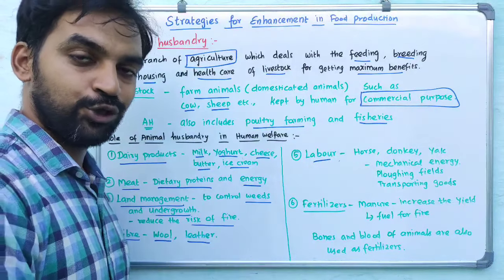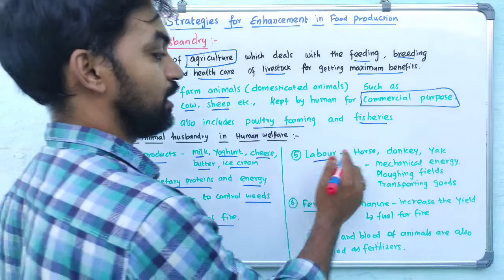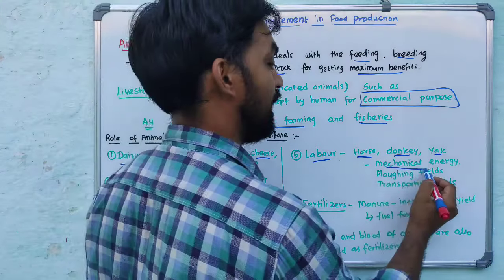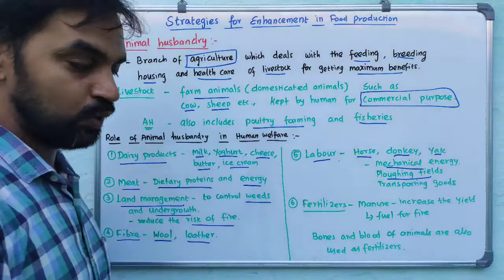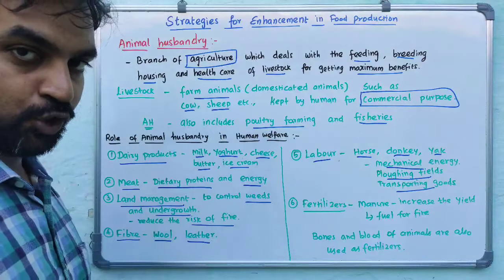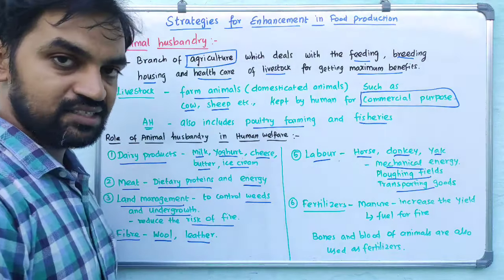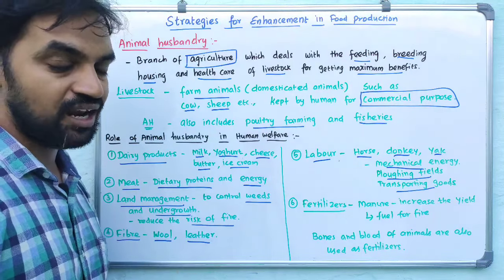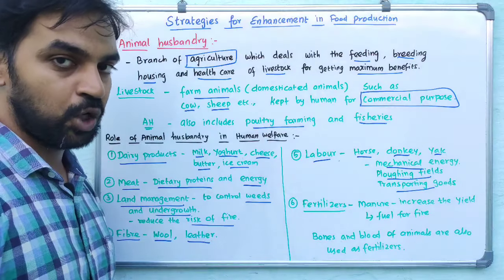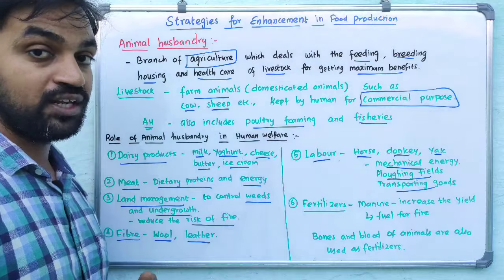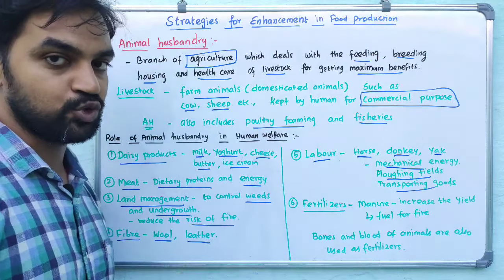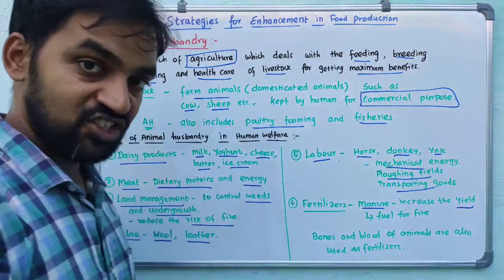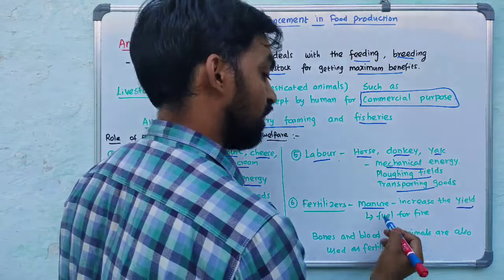Things used for transportation — horse, donkey, and ox are used for transportation, including plowing fields and transporting goods. Next, fertilizers: natural fertilizers from animal manure help plants grow better and improve yield. Animal dung also acts as fuel for fire — for example, dried dung cakes are used as fuel.